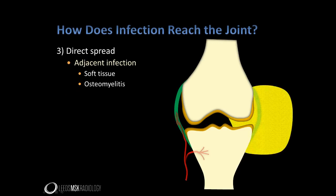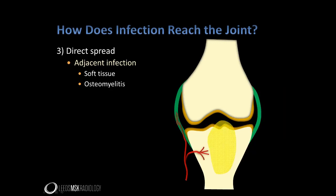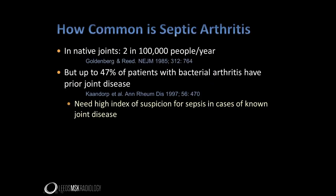Infection can also reach a joint through direct spread from an adjacent source of infection, such as a soft tissue collection, or via direct spread from infection in an adjacent bone. Septic arthritis is relatively common, and in a busy practice you should expect to come across cases fairly frequently. Many of the patients with bacterial septic arthritis will have a history of prior joint disease.